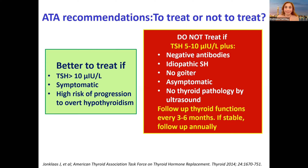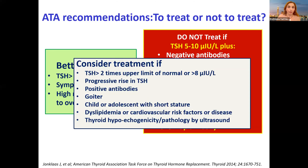Follow up thyroid functions every three to six months; if stable, follow up annually. Better to treat if TSH is above 10, whatever the etiology, if symptomatic, or if there is high risk of progression to overt hypothyroidism. Even more difficult is the gray zone: consider treatment if TSH is two times the upper limit of normal, above 8.